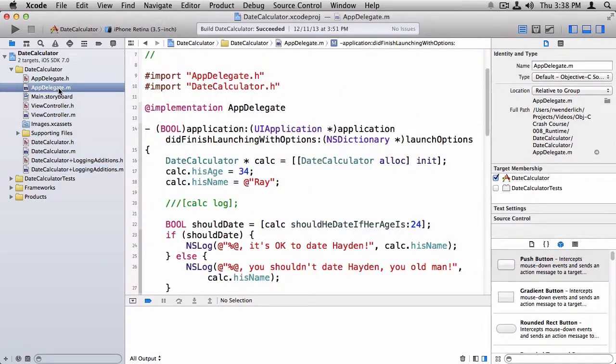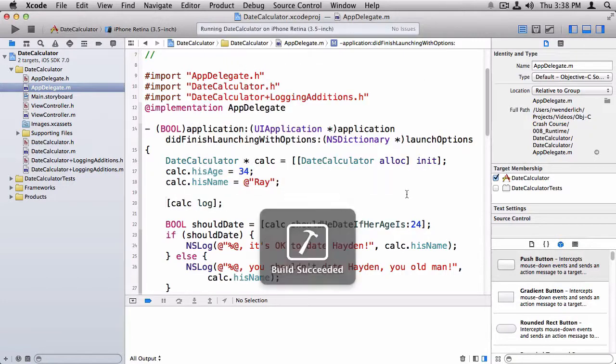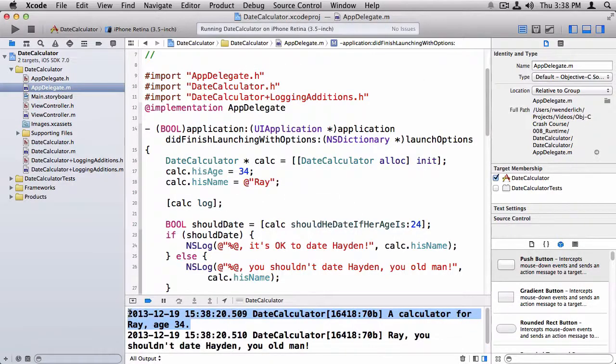So now that I've done this, switching back to appdelegate.m, all I have to do to use the category is import the header file. And then I can call my new method here. And down here, I see my new message, a calculator for Ray, age 34.